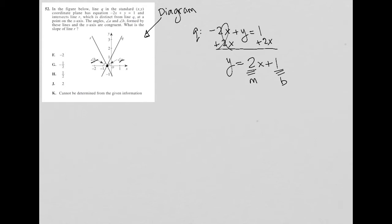What is the slope of line R? Okay, so we want to find the slope of line R. We're basically given the equation for line Q, and then we're told this information about the angles.